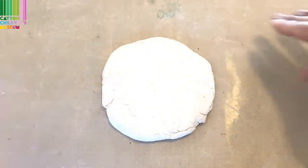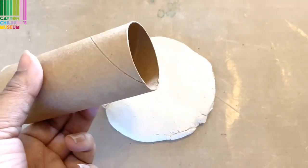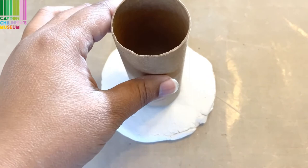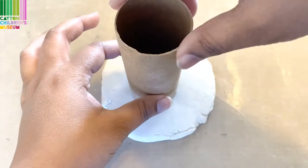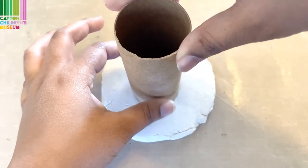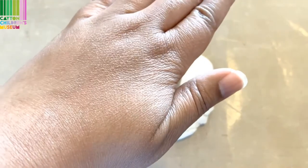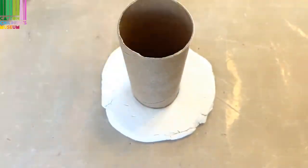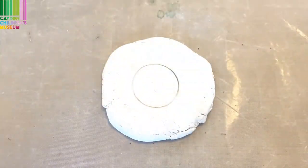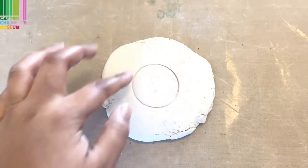And the next thing we do is just take my roll here, try to center it as best as I can. And I'm just going to lightly press down just a little bit so that I can mark where the candle will go.